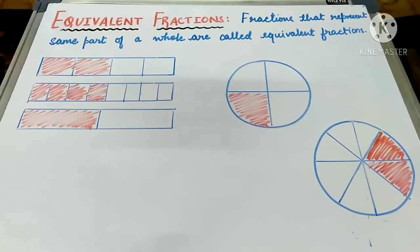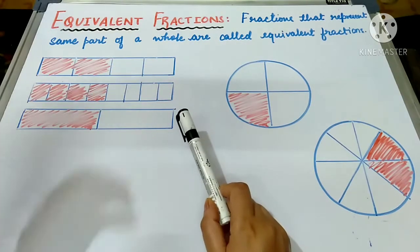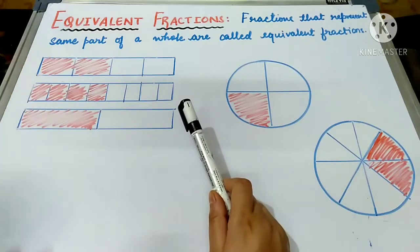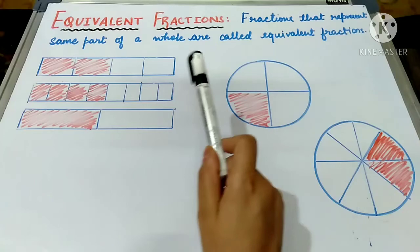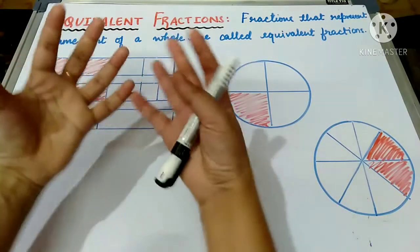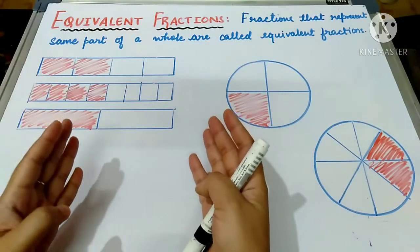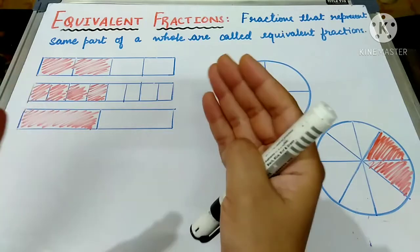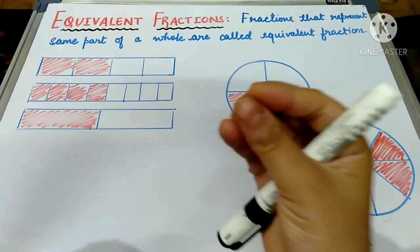Now our topic is equivalent fractions. What are equivalent fractions? What is meant by the term equivalent? Equivalent means equal. Equal fractions kaun se hoote hain? Fractions that represent the same part of a whole are called equivalent fractions. A whole is a complete thing. Toh agar uske same parts ko represent karta hai, that are known as equivalent fractions.